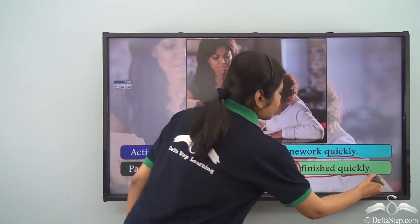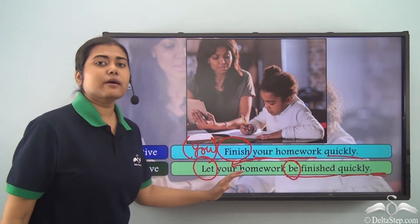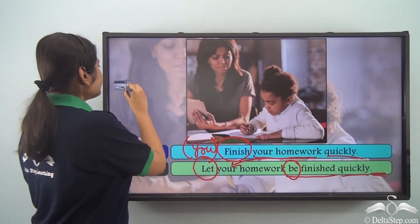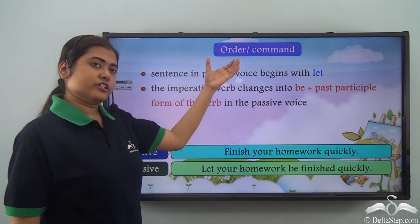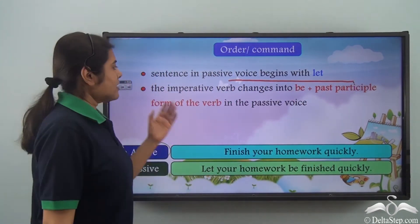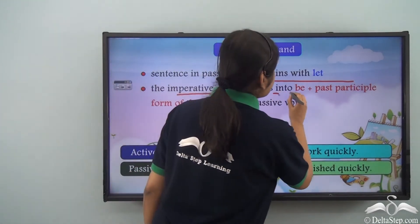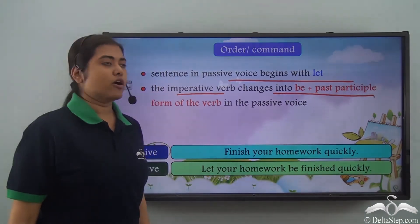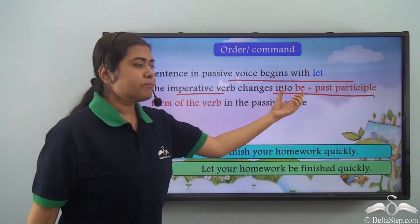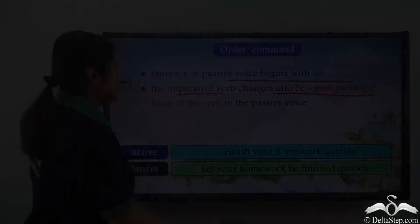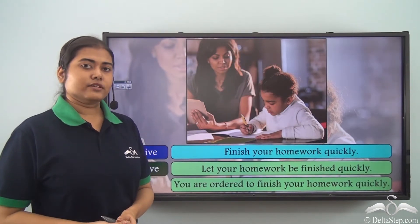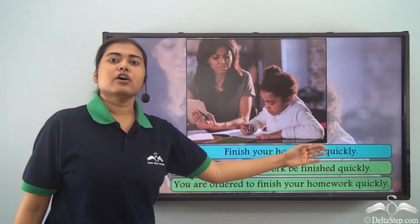Notice that here we had a subject 'you' which was not mentioned but understood. So we have not mentioned any doer in the passive voice — the doer is not important here. In sentences giving an order or command, we begin the sentence with 'let'. Also, the imperative verb changes into 'be' plus past participle form. We need not worry about the appropriate form of the be verb; we simply put 'be' plus the past participle form of the verb.